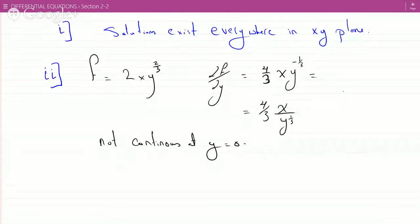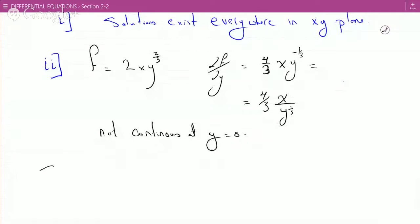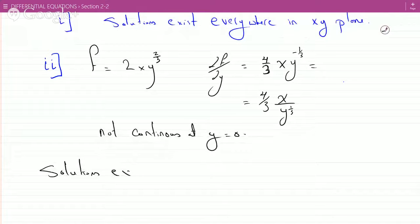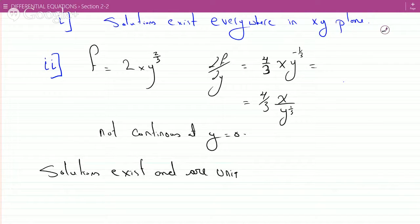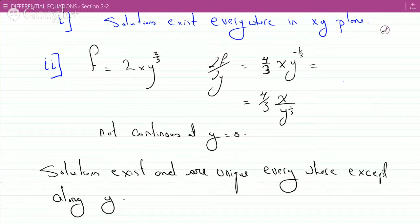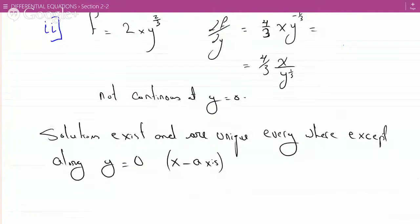Therefore, what are the regions in the xy plane where the solutions exist and are unique? So solutions exist and are unique everywhere except along y equals zero, which is the x-axis. Why? Because at y equals zero, you violate the existence and uniqueness theorem, and partial of f with respect to y is not defined there because it will blow up. You can't have zero in the denominator.